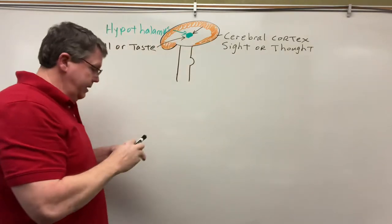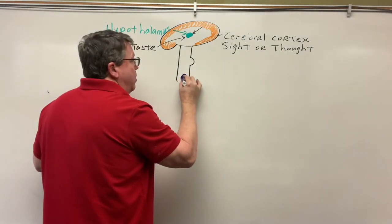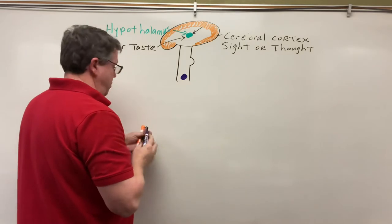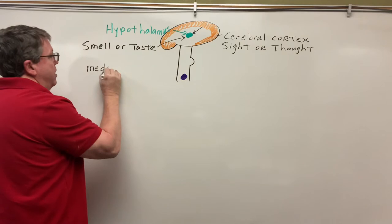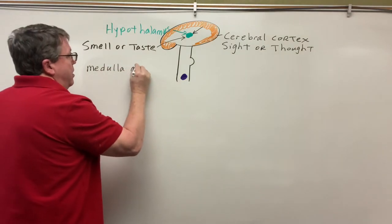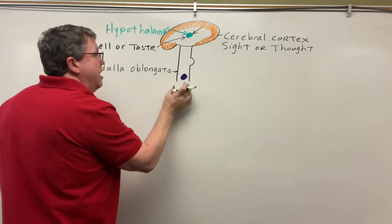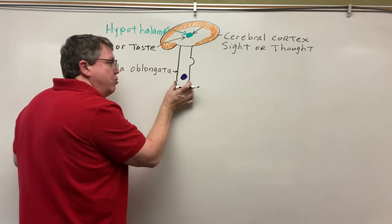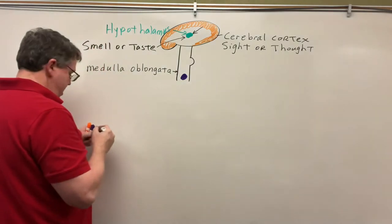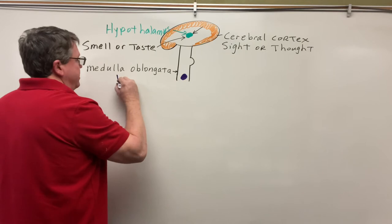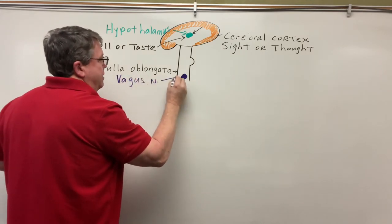Now, in the brainstem, in the medulla oblongata, we have something called the vagus nerve. The spinal cord actually connects to the medulla oblongata, and this is the beginning of my vagus nerve.